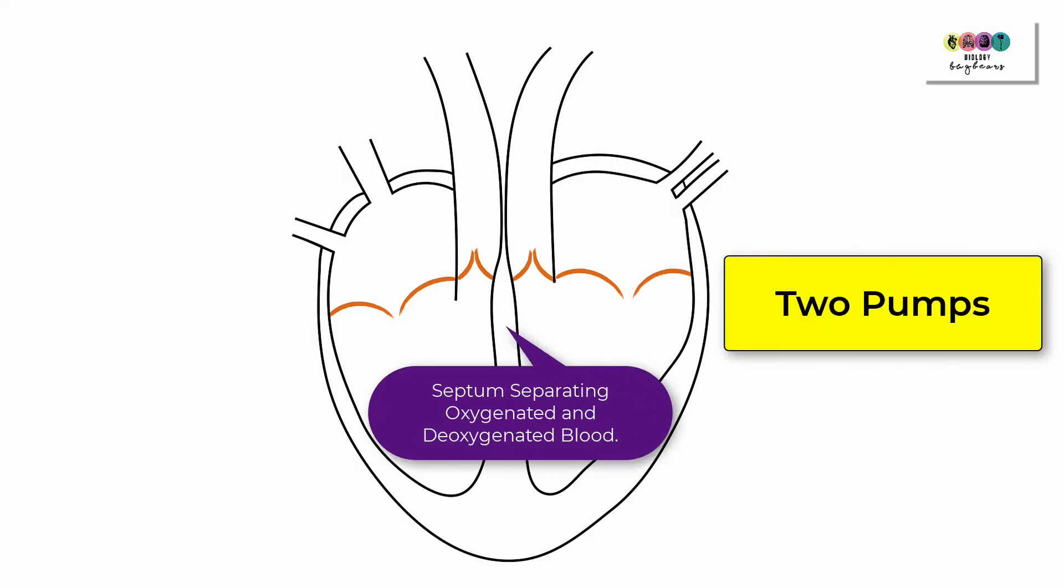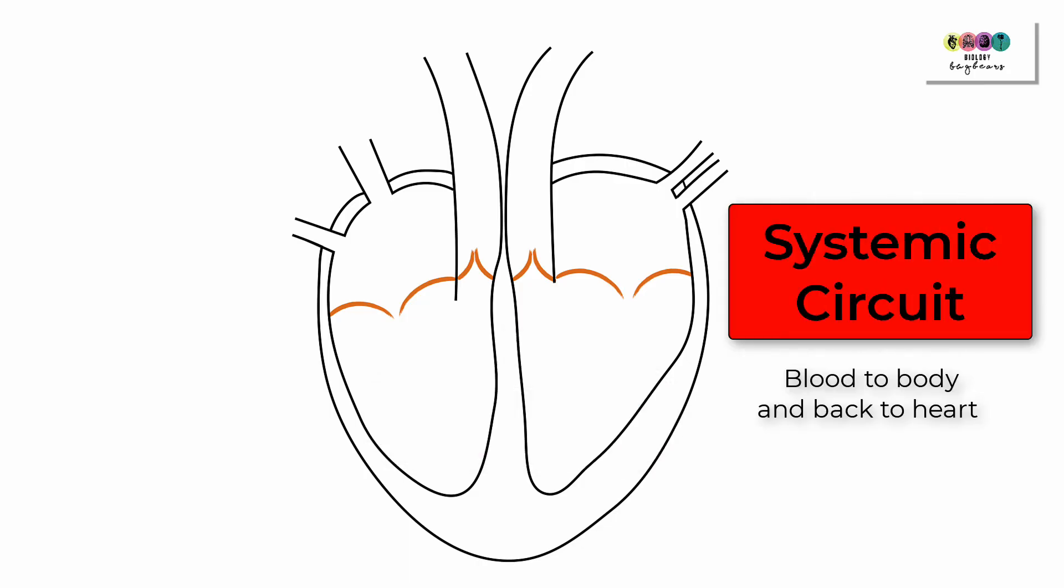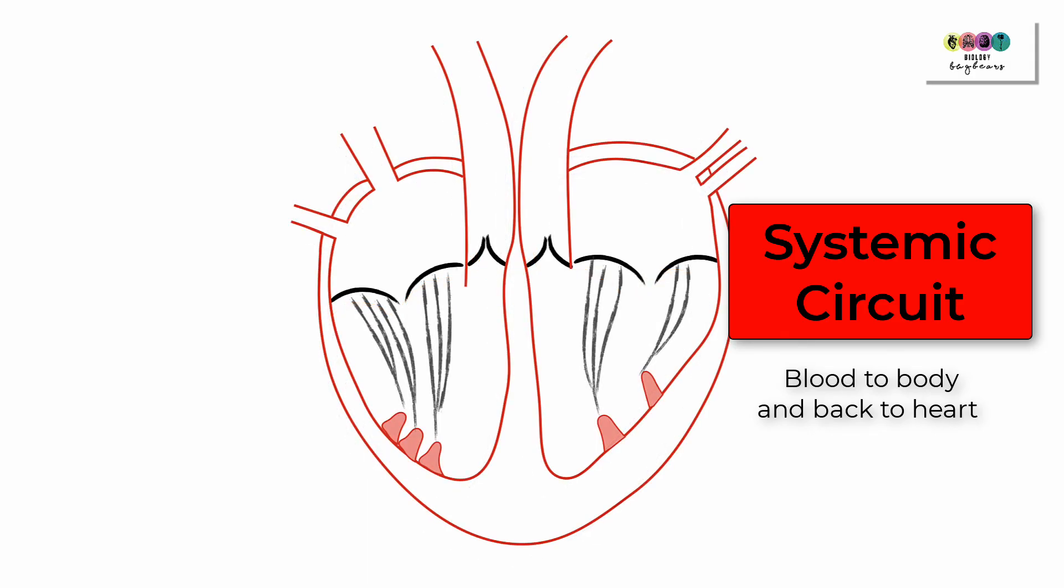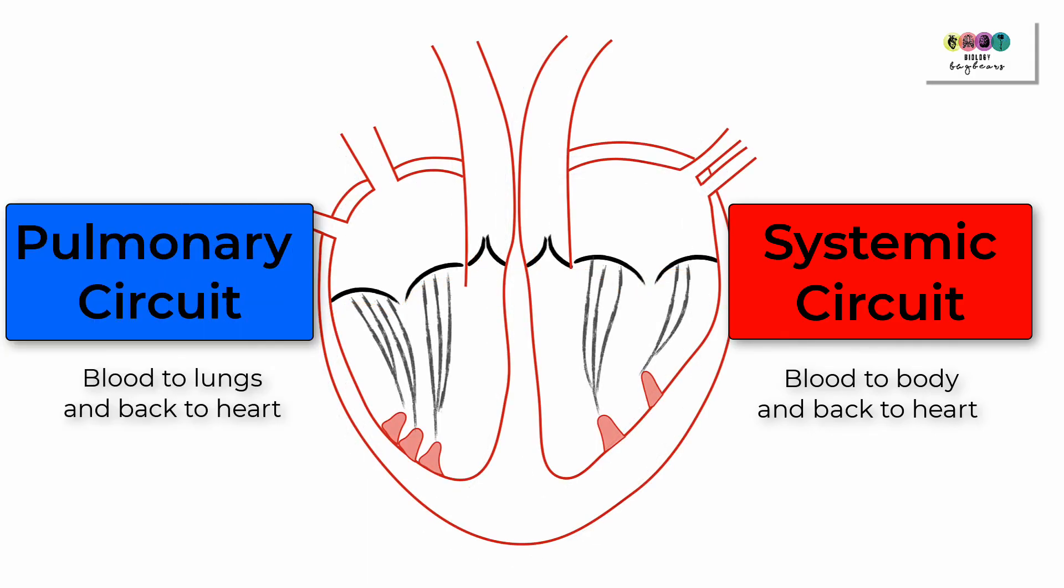The heart is really two pumps in one. You have the septum separating the left side and the right side of the heart—the oxygenated and deoxygenated blood. This makes the heart really efficient. The left side deals with the systemic circuit, pumping the blood to the body and back to the heart again. The right side of the heart deals with the pulmonary circuit, pumping the blood to the lungs and back to the heart again.